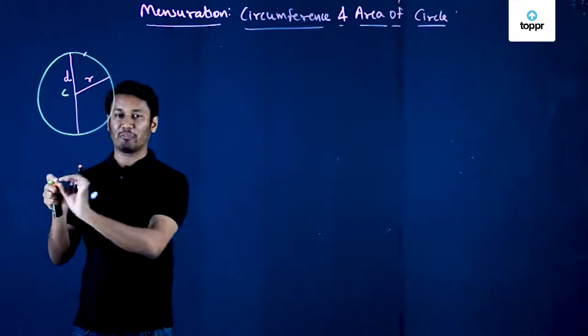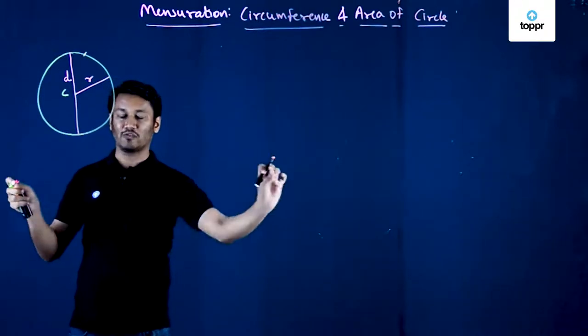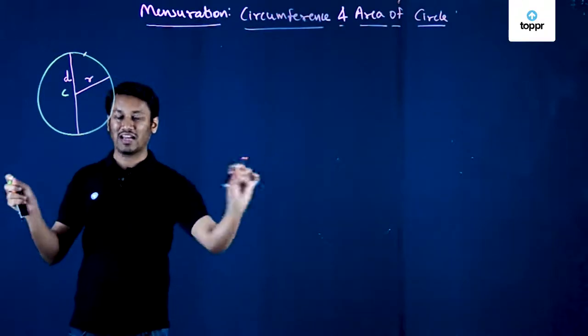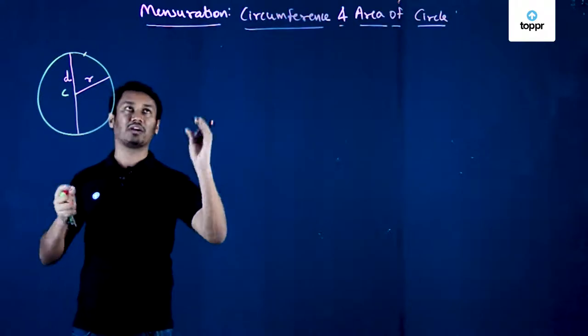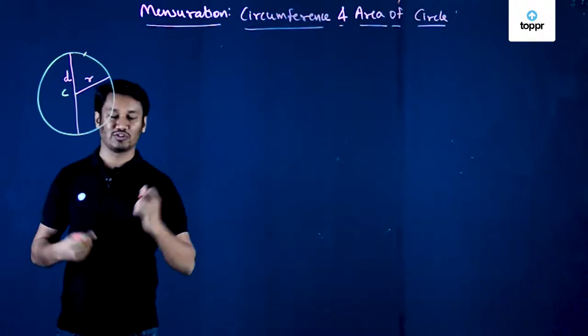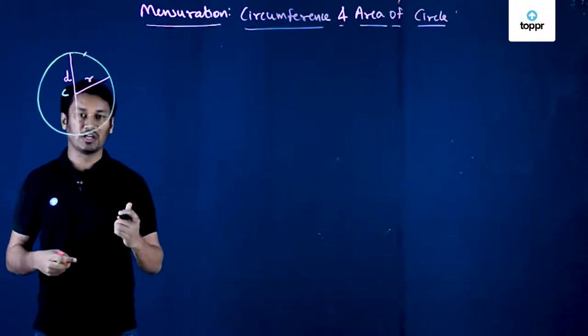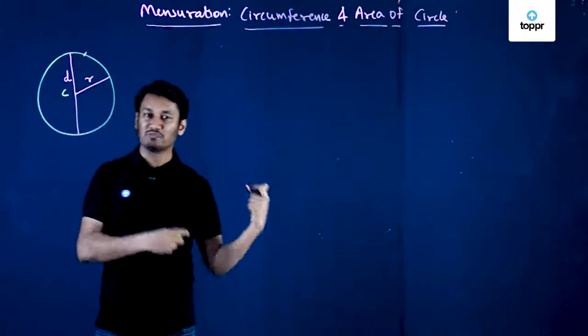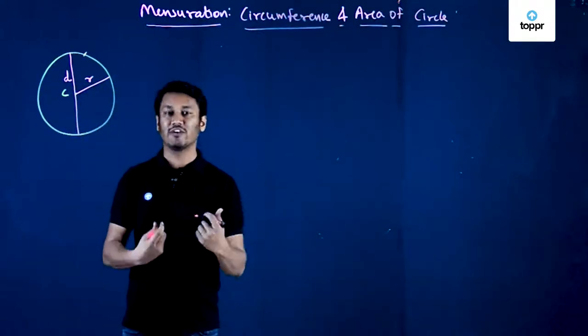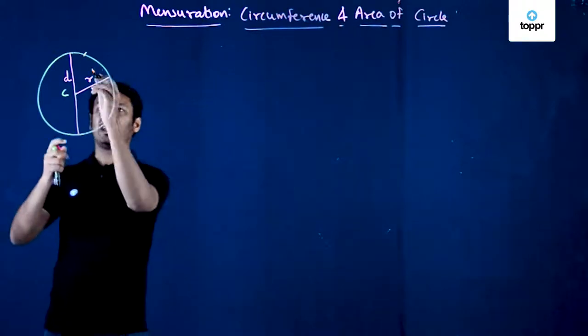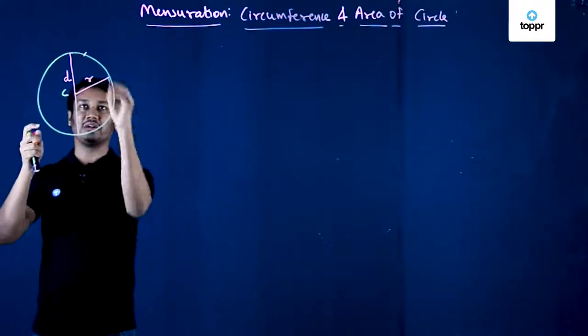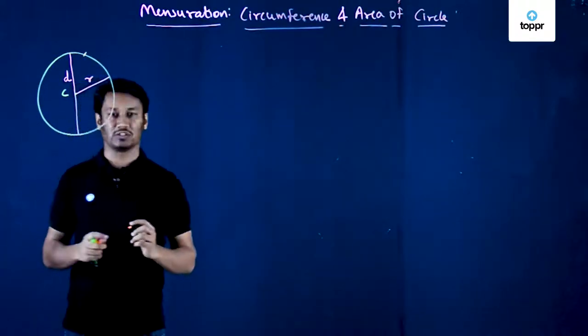If I measure the length of that entire straight line obtained, that will become the circumference of the circle. In simple words, circumference is nothing but the total length of the perimeter of the circle.